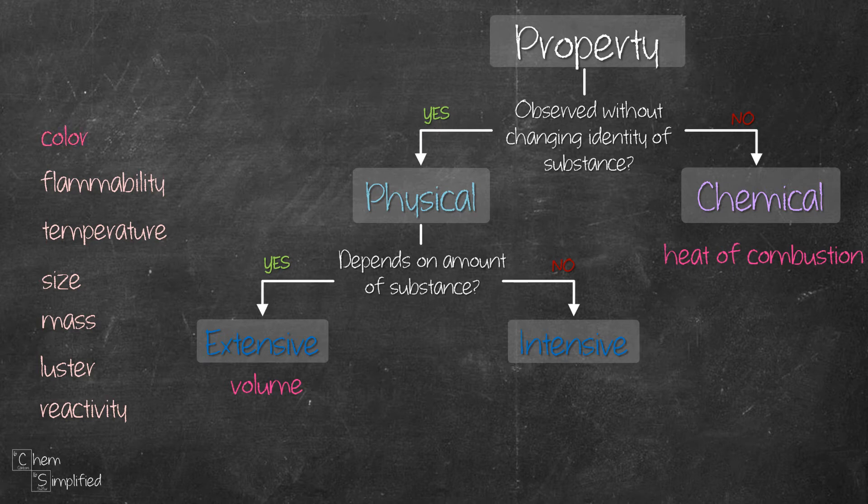Colour can be observed without making any change to the substance's identity, therefore making it a physical property. Since we can observe the colour regardless of the amount, that makes colour an intensive property.